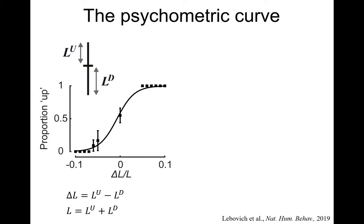However, this is not our typical participant. Some participants tended to respond that the down segment is longer — the probability of choosing 'up' was smaller than 50% when delta L equals zero — whereas others had a preference toward 'up.' The deviation of the psychometric curve from 0.5 at zero, the fact that the curve is shifted left or right, is the choice bias I am interested in.